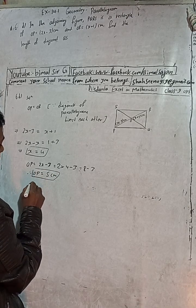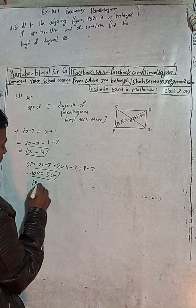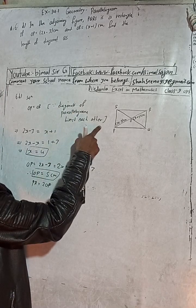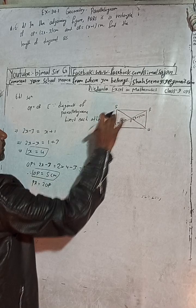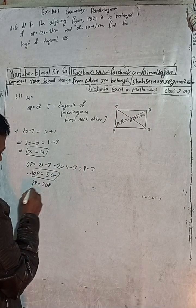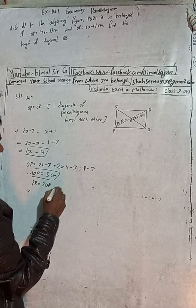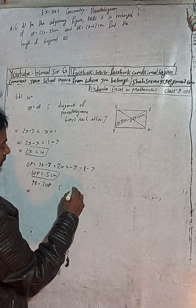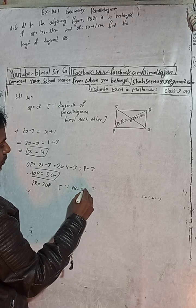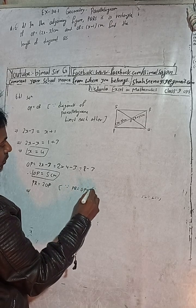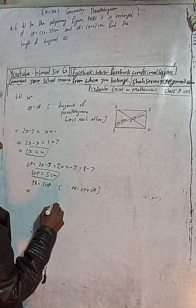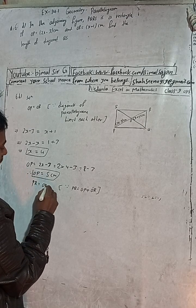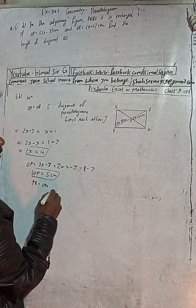Therefore PR is equal to 2 times OP. Since the diagonals bisect each other, OP equals OR, so PR equals OP plus OR equals OP plus OP, which is 2 times OP.